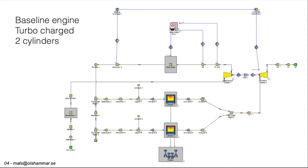The baseline engine looked like this. Air comes in from the left and it goes through the two combustion cylinders, and comes out through the right after passing the turbine and the compressor stage.